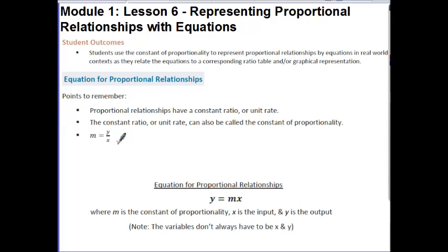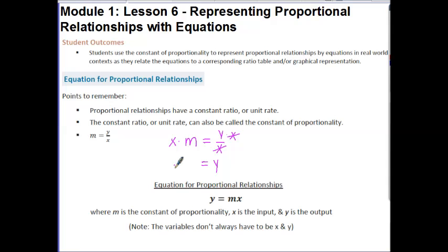Now what we're going to do is rearrange this equation. I want to get rid of the x, so I'm going to do the opposite operation. I see division here, so I'm going to multiply both sides by x. That's going to cancel my x's — x divided by x is 1, and 1 times y is y — leaving us with x times m, which I'll rearrange using the commutative property and write as m times x. So the equation for proportional relationships is y equals m times x, where m is the constant of proportionality, x is the input, and y is the output.